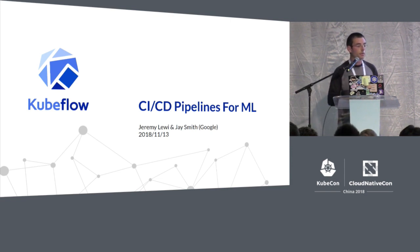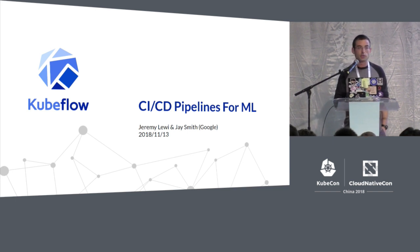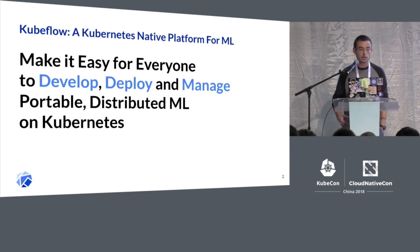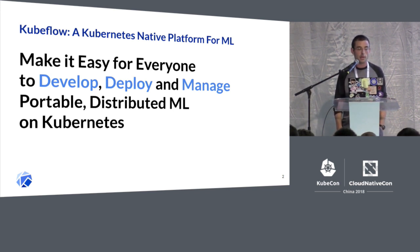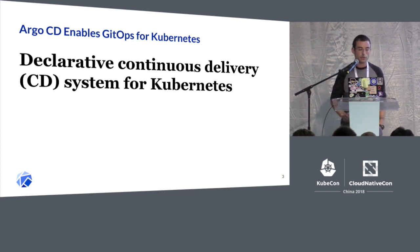I'll be talking about how Kubeflow is enabling CI/CD pipelines for machine learning. Today I'll be talking about two different tools: Kubeflow and Argo CD. Kubeflow is a Kubernetes-native platform for machine learning — our mission is to make it easy for everyone to develop, deploy, and manage portable distributed ML on Kubernetes. Argo CD is a tool that enables GitOps for Kubernetes; it's basically a declarative continuous delivery system for Kubernetes.